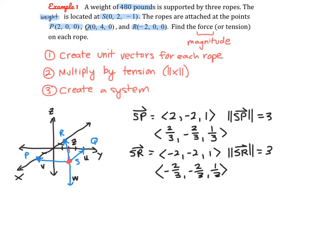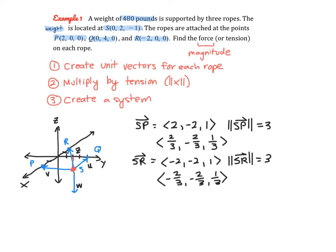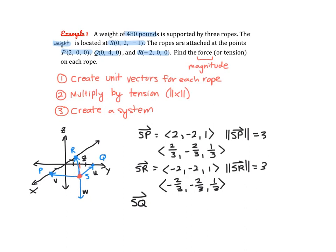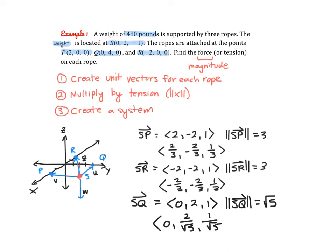For vector SQ, the terminal point is (0, 4, 0) with the same initial point. The component vector is (0, 2, 1). The magnitude is the square root of 2² + 1² = √5. So the unit vector is (0, 2/√5, 1/√5).